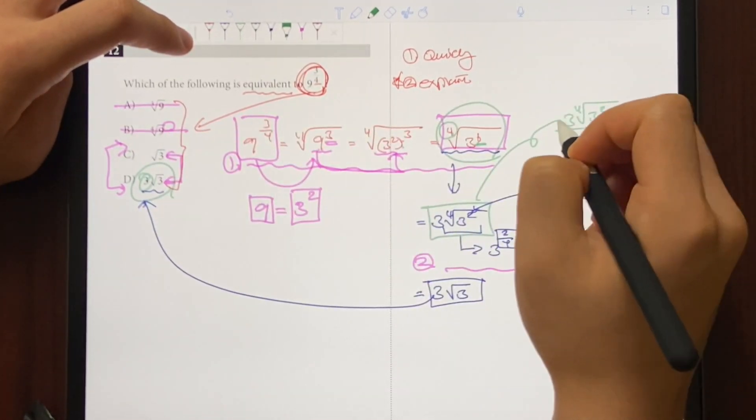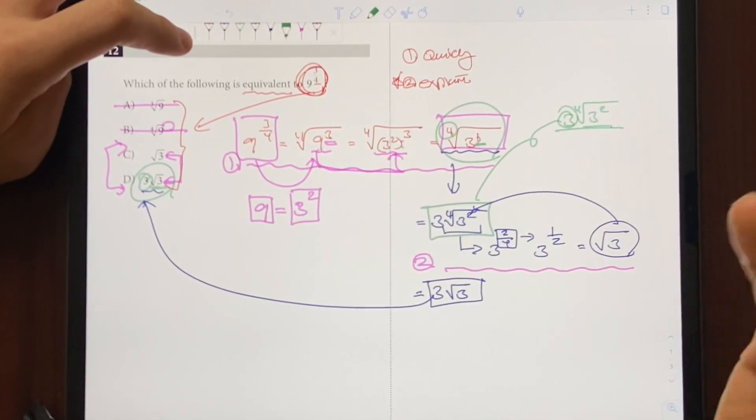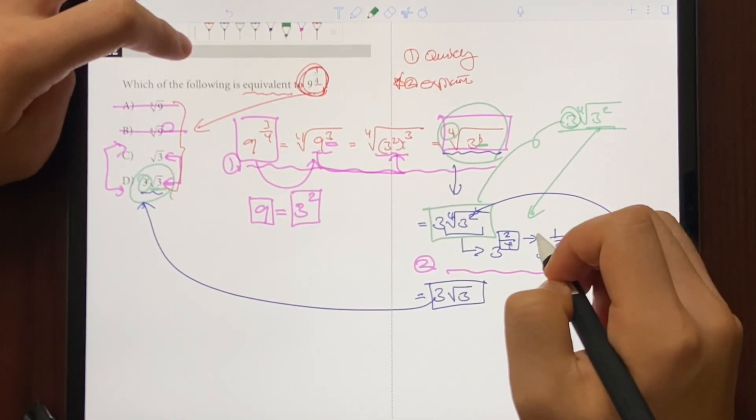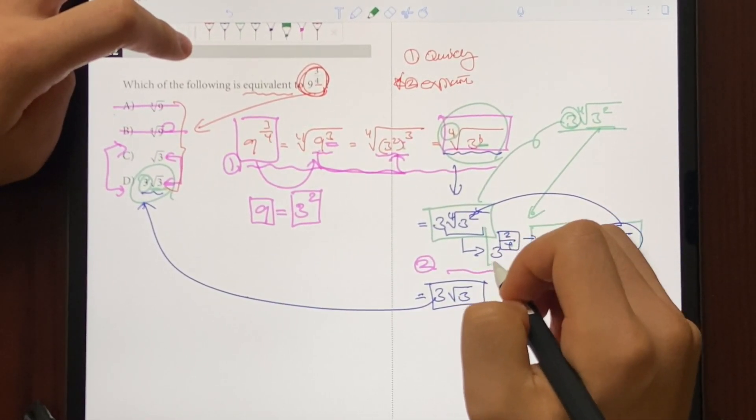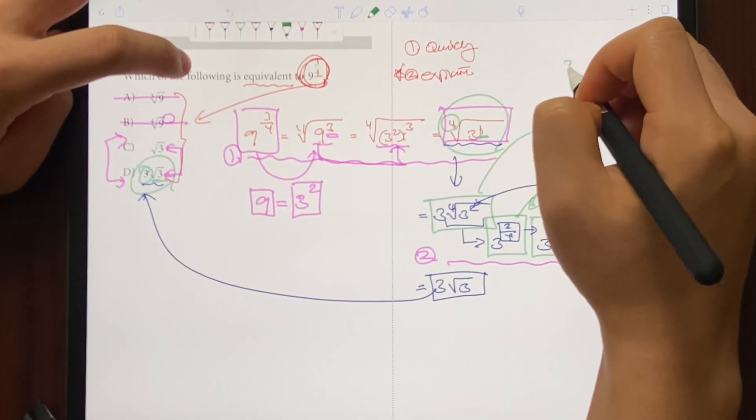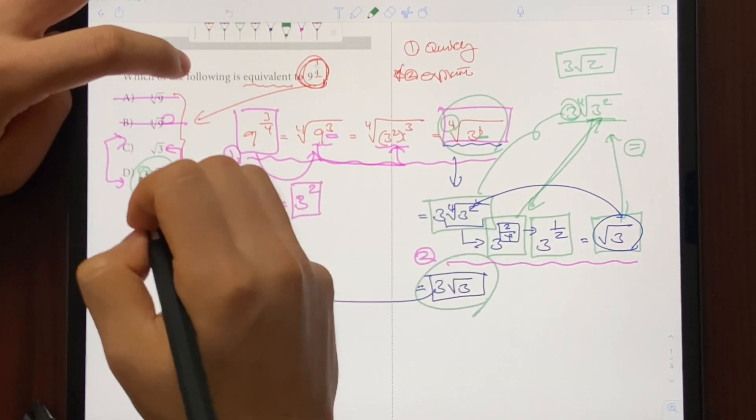So when you see this, you can kind of tell that you might be onto something. Right now, your 3s are currently matching up, but the radical is not matching up. So we're going to have to modify the radical a little bit. So let's change it back into an exponent form. And now you know that square root of 3 is same thing as 3 to the 1 half, which is same thing as 3 to the 2 fourths, which is same thing as quad root. And if you do that, you end up with 3 square root of 3, which is same thing as your final answer right here, which is same thing as choice D.